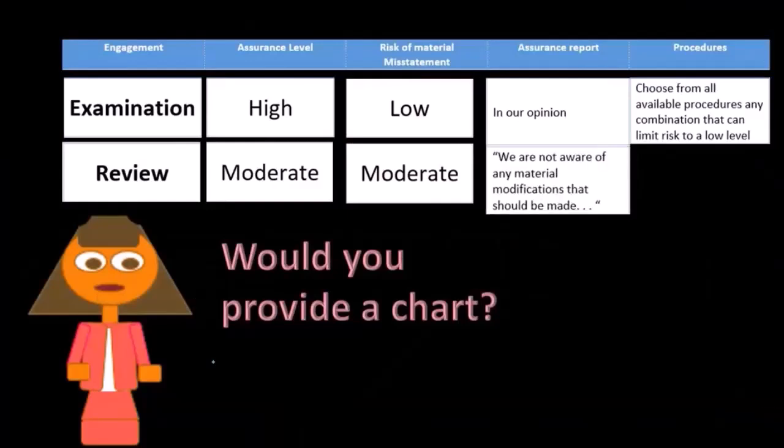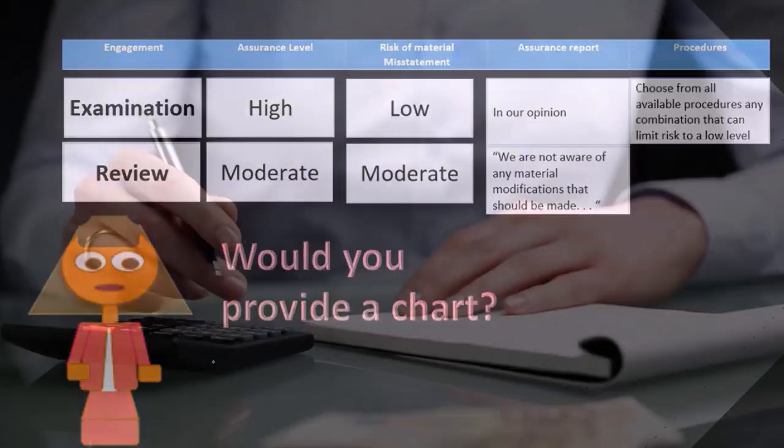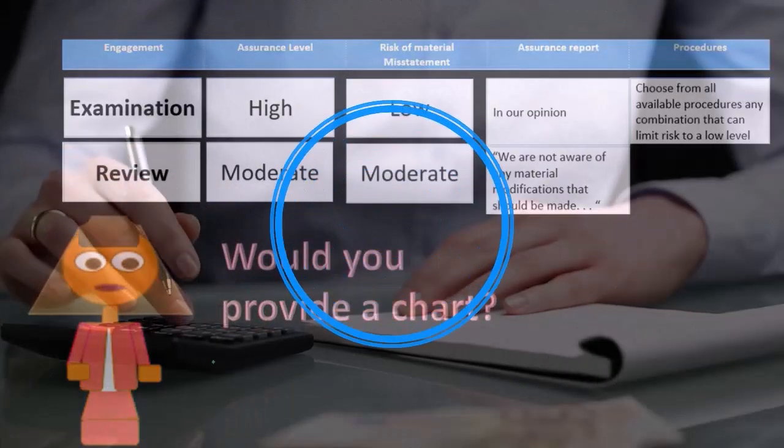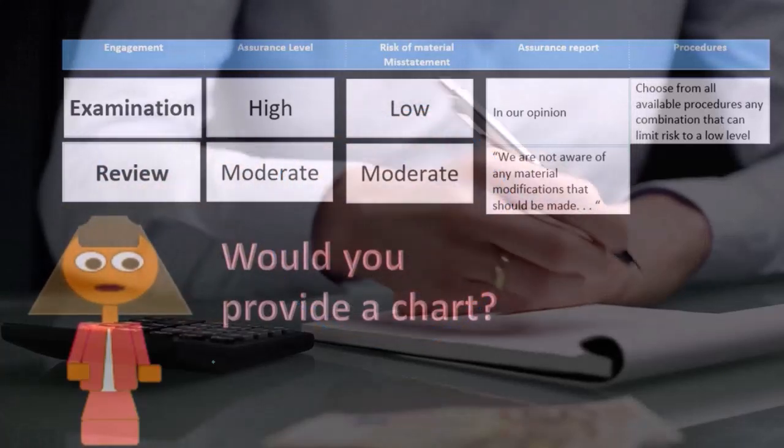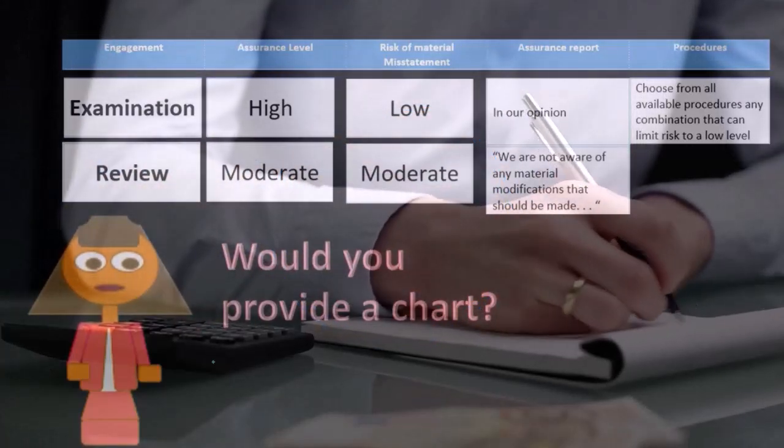If we do a report, the report would say something like we are not aware of any material modifications that should be made. So you can see that that's a lot more lawyerly and not giving a full assurance there.